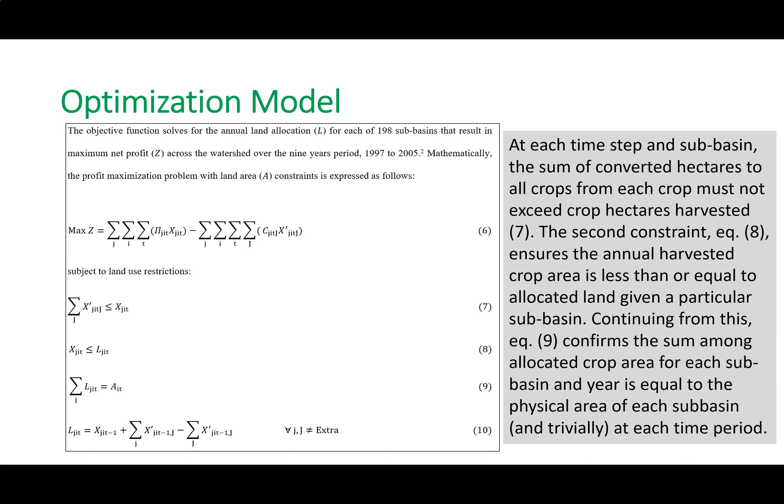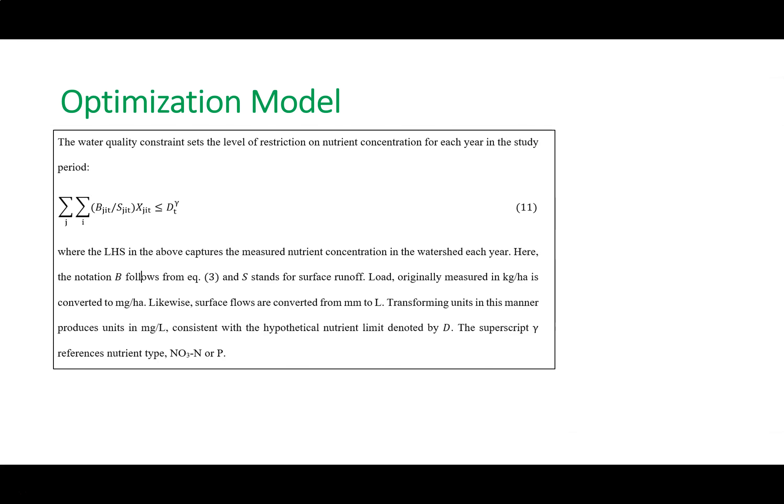We developed a dynamic linear optimization model to maximize economic welfare over space and time, subject to land use constraints. We also accounted for land conversion costs — for example, converting forest into agriculture costs $200 per acre to clear land and prepare soil for planting agricultural crops. These opportunity costs are incorporated into the model. A water quality constraint was also successfully incorporated into our modeling effort.